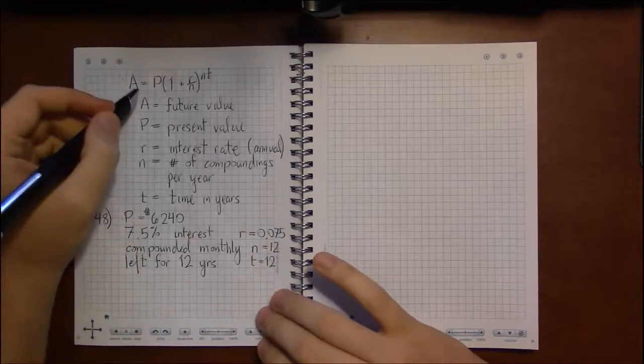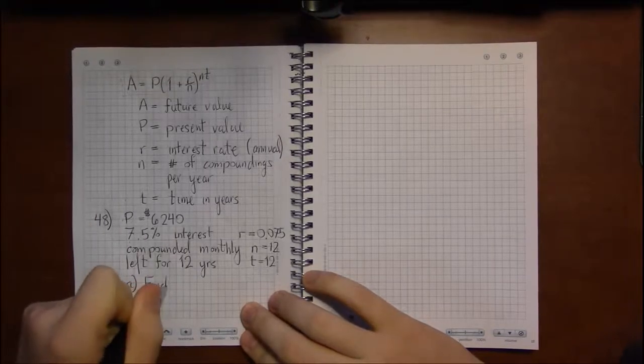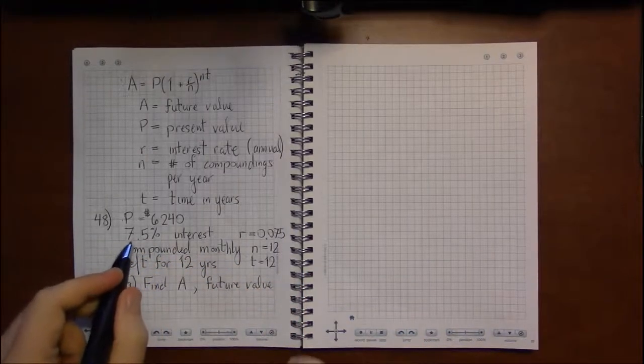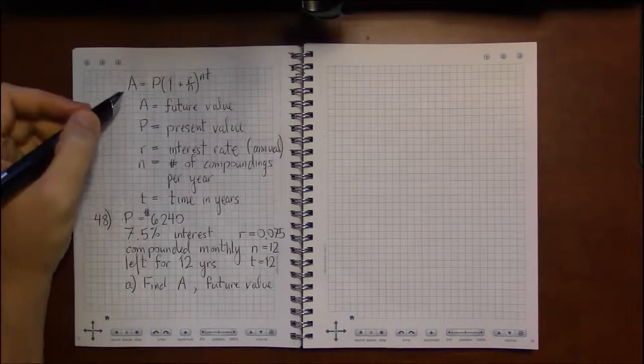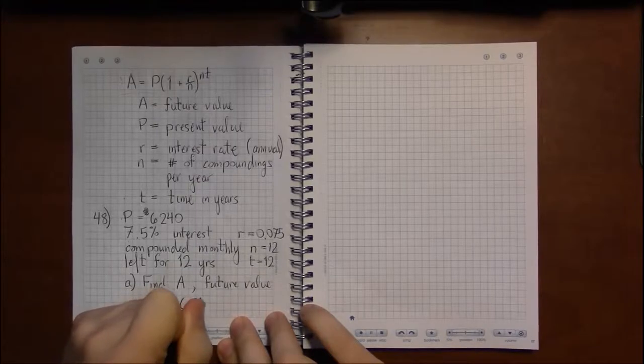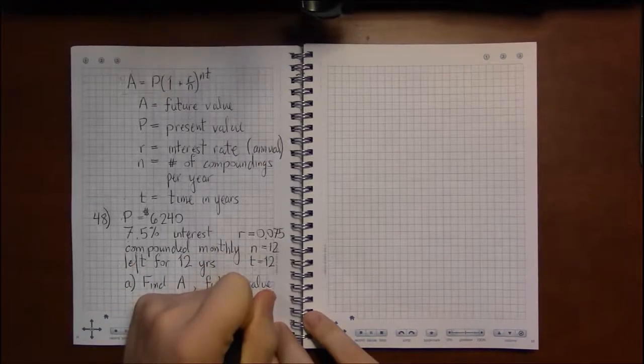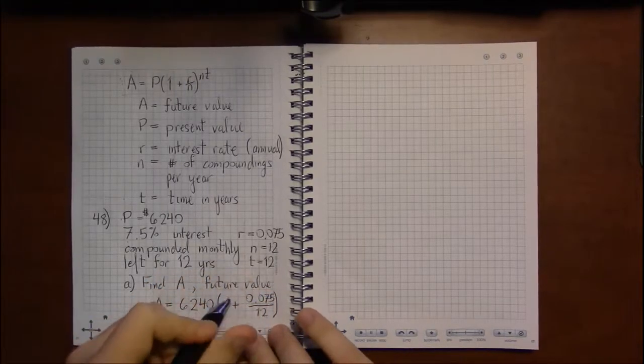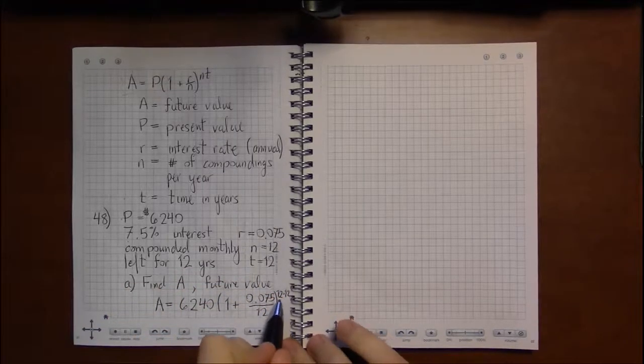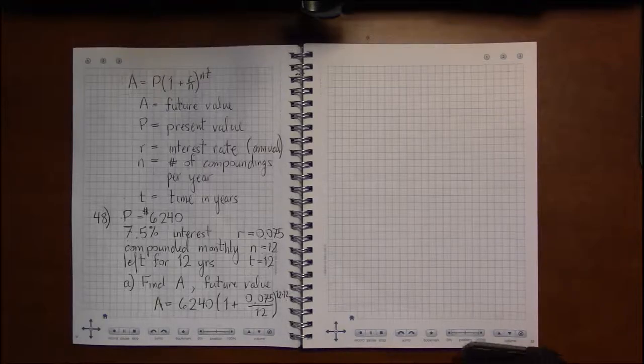So if we plug all these numbers in, the only thing we don't know is the final amount, which is what we're asked to find. Find A, or the future value of the account. Well, all we're going to do is plug all these numbers in and plug them into our calculator to figure out the answer. So we have P being 6,240 and then 1 plus the interest rate as a decimal, so 0.075. We're going to divide that by 12, since we're compounding once every month, and then to the 12 times 12 years. So there's going to be 144 compoundings because that's how many months there are in 12 months.